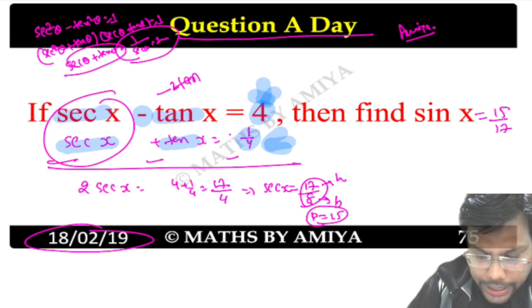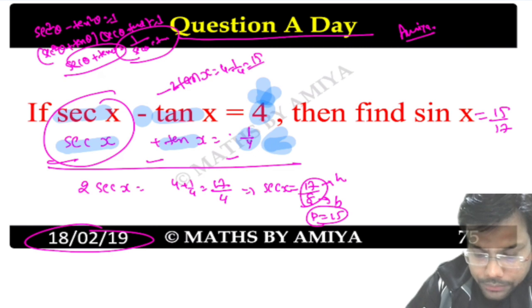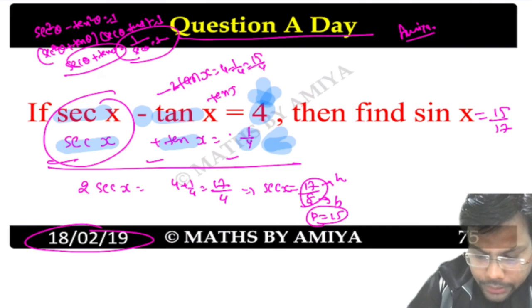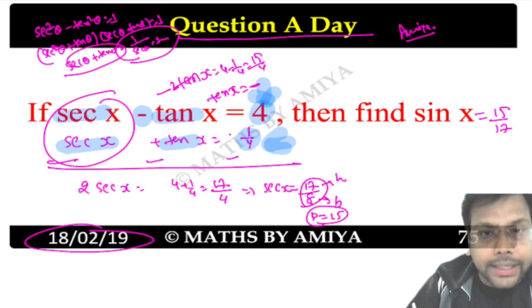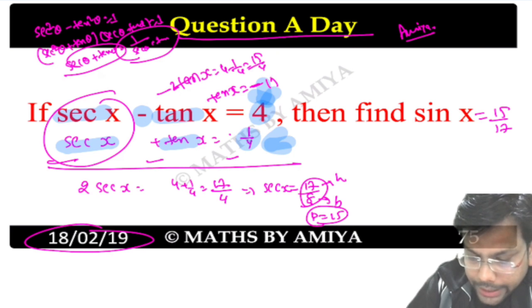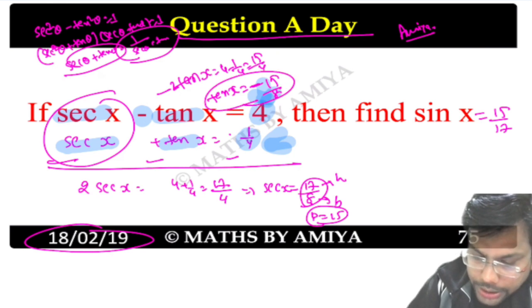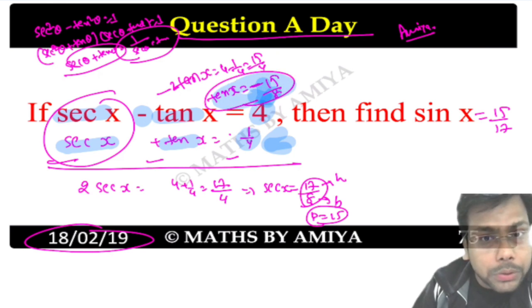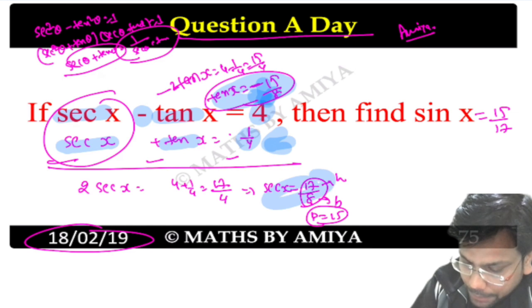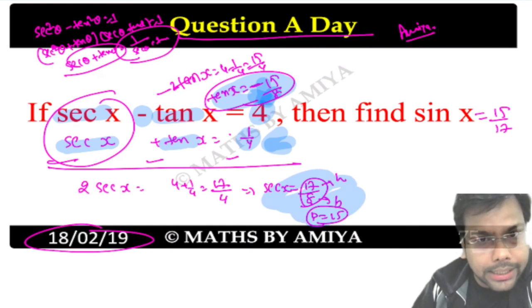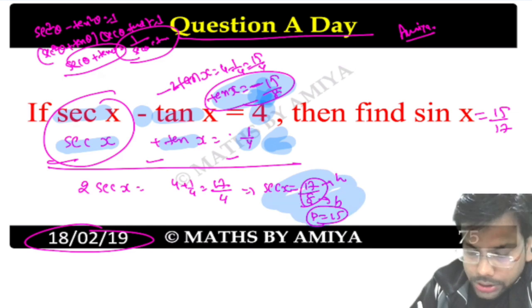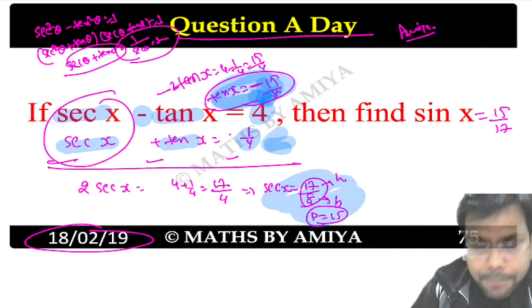Then 2 tan x = 4 - 1/4, which is nothing but 15/4, so tan x = -15/8. You should note that sec is positive and tan is negative.